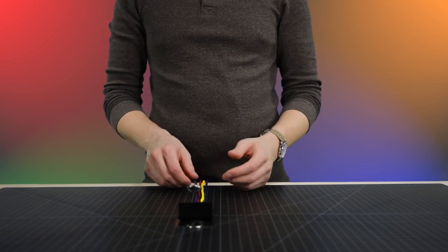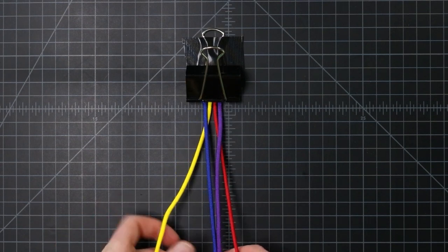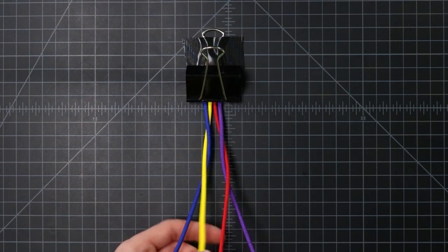If we add a fourth cord, it gets a little bit tricky. We can't just add it to the middle anymore because we'll just keep on twisting our yellow around our blue and our red around our purple.